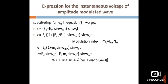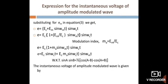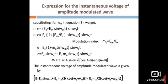We know that sin A × sin B = ½[cos(A − B) − cos(A + B)]. Applying this identity, the equation becomes: E = Ec sin(ωc t) + (Ec·ma / 2) cos((ωc − ωm)t) − (Ec·ma / 2) cos((ωc + ωm)t). This is the expression for instantaneous voltage of amplitude modulated wave.